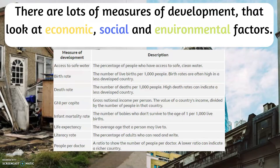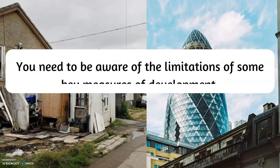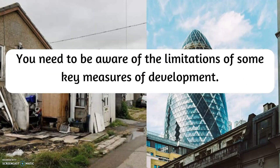Birth rate – the number of live births per 1,000 people. Death rate – the number of deaths per 1,000 people. GNI – gross national income per person, so the value of a country's income divided by the population. Infant mortality rates, life expectancy, literacy rate – the percentage of adults who can read and write – and people per doctor ratio. You need to be aware of the limitations of some of these key measures of development.